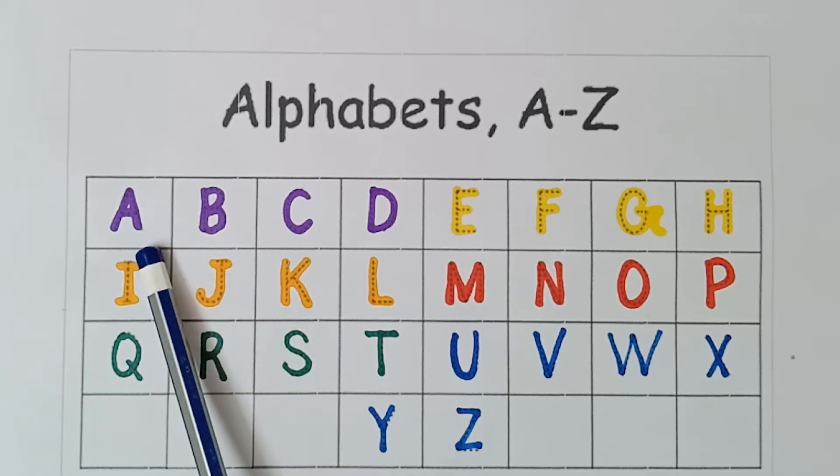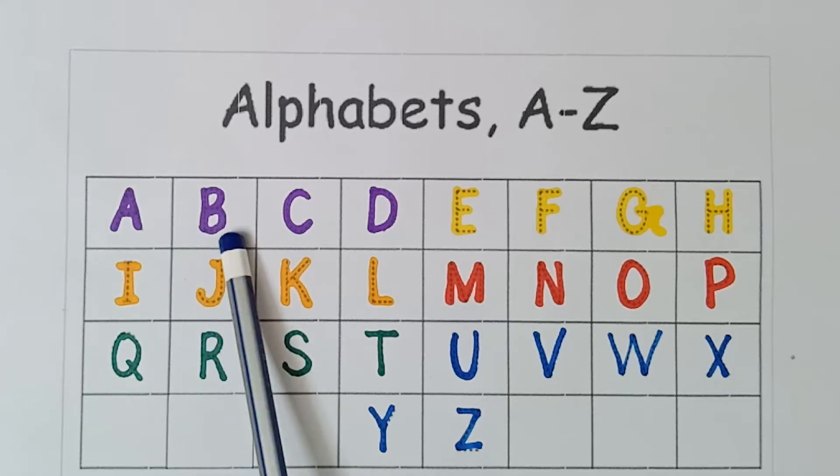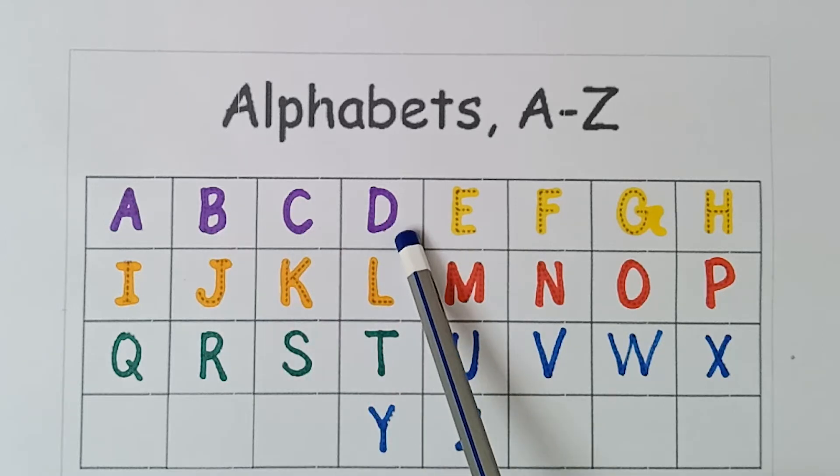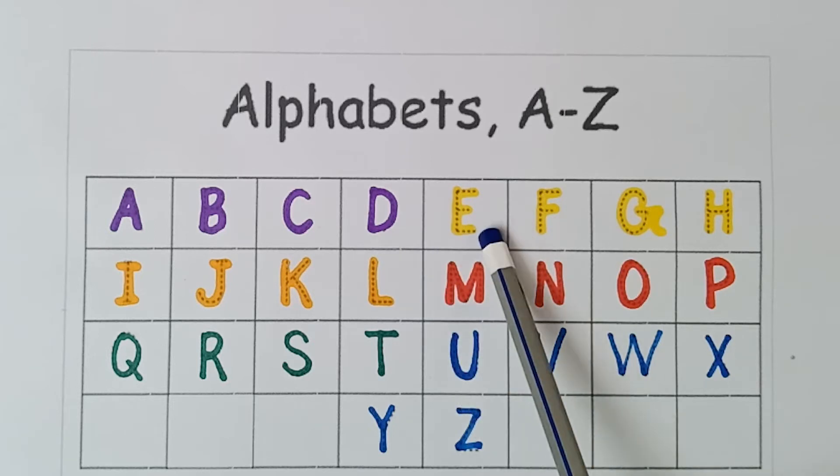A. A for Ant. B. B for Ball. C. C for Cat. D. D for Dog. E. E for Elephant.